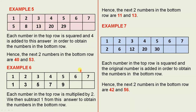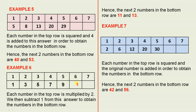Example 6: we have the numbers in the top row and the first five. Each number in the top row is multiplied by 2, then we subtract 1 from this answer to obtain the numbers in the bottom row. So 2 1s are 2, take away 1 gives you 1. 2 2s are 4, take away 1 gives you 3. 2 3s are 6, take away 1 gives you 5 and so on. 2 6s are 12, take away 1 to give you 11. 2 7s are 14, take away 1 to give you 13. Hence, the next two numbers in the bottom row are 11 and 13.